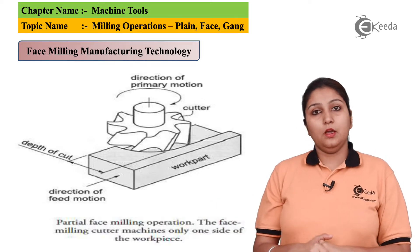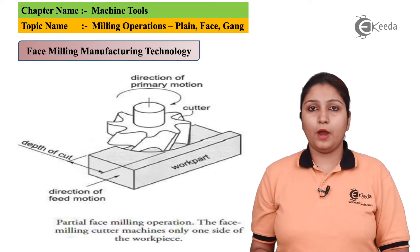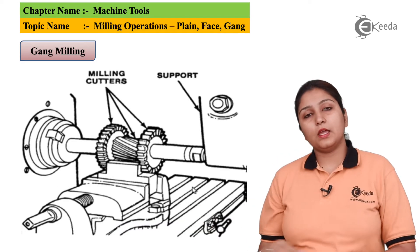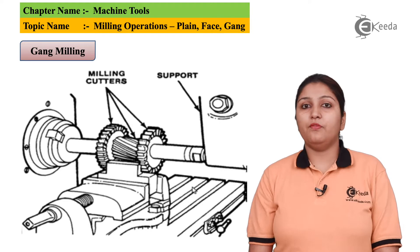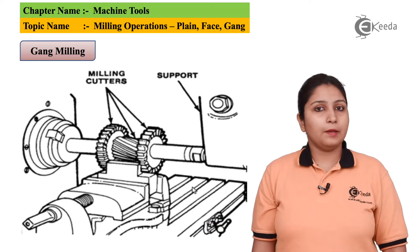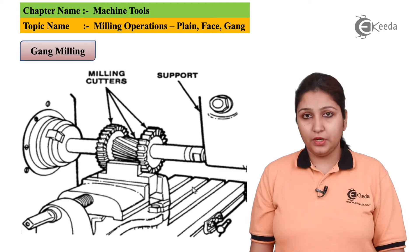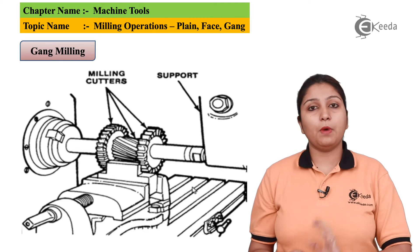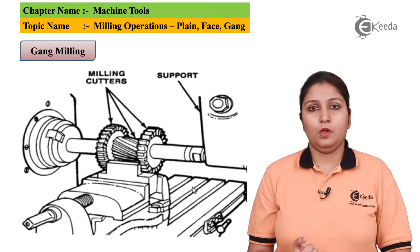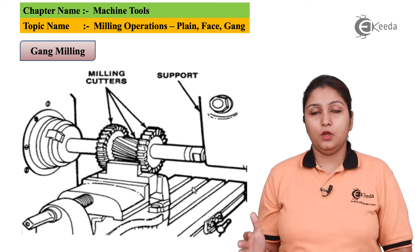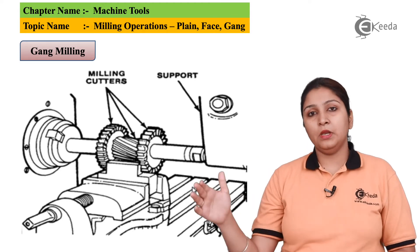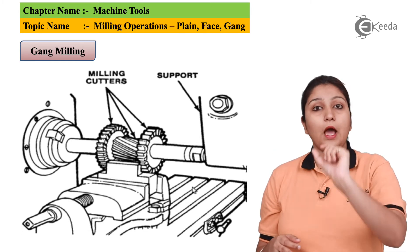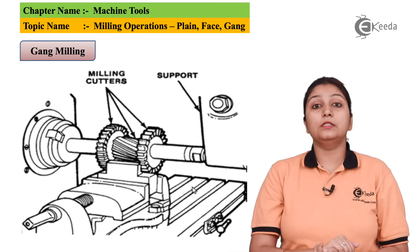A proper depth of cut is to be provided to the face miller so that it mills properly. Now, for gang milling — what is the beauty of a gang milling cutter? It reduces the operation time. Two or three milling cutters can be mounted on a gang milling cutter which can perform different operations simultaneously. In this way, two, three, four, or n number of milling cutters are mounted on a single arbor and milling is done simultaneously.